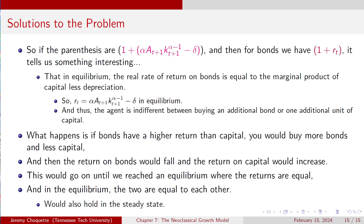In equilibrium, the agent is indifferent between buying an additional bond or an additional unit of capital. If bonds have a higher return than capital, you'd buy more bonds and less capital. As everybody buys more bonds, the return on bonds falls and the return on capital increases, continuing until equilibrium is reached where returns are equal. And this would also hold in the steady state — the real interest rate equals the rate of return on capital. That's something really interesting and it makes sense.